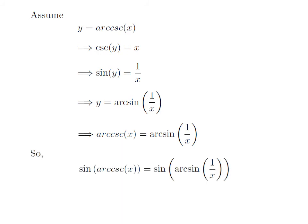So sine of arc cosecant of x equals sine of arc sine of 1 divided by x. As arc sine is inverse of sine function, this implies sine of arc cosecant of x equals 1 divided by x.